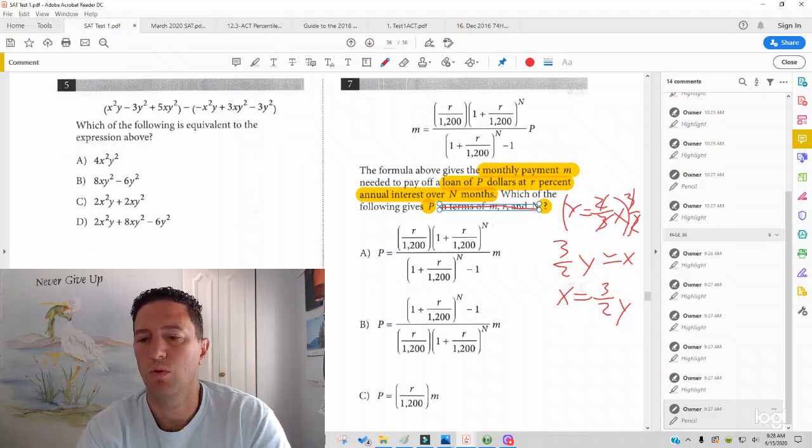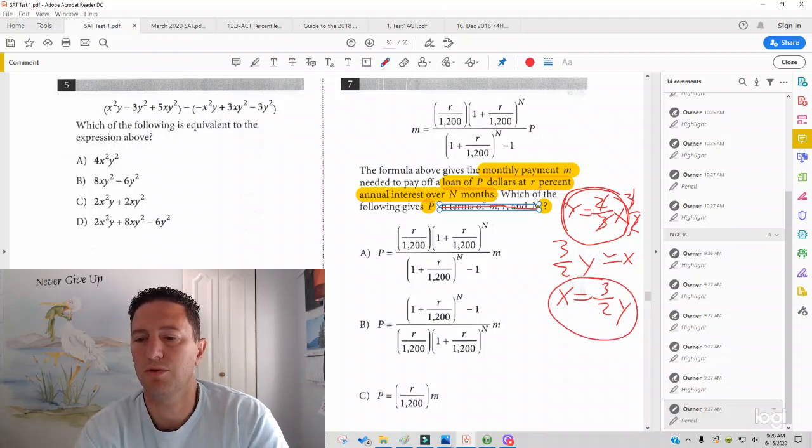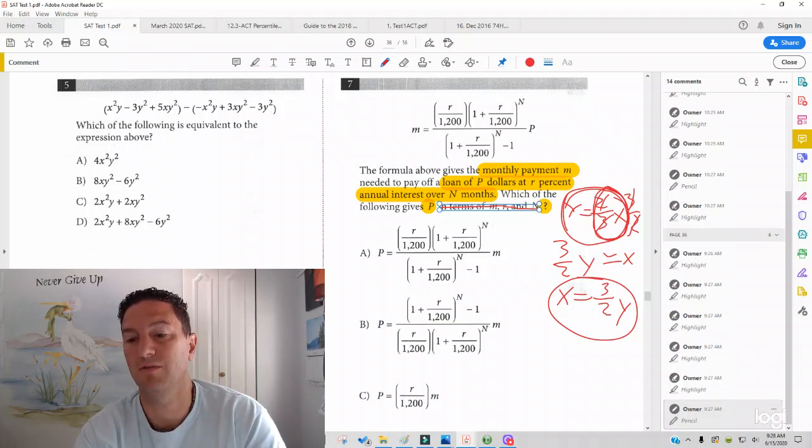notice what happened with my original here and my result here. So I had 2 thirds stuck to X over here. Now when I get X alone, what happens is the reciprocal, in other words 3 halves, gets stuck to Y and now X is alone. And that's what we see here.